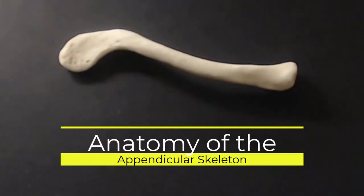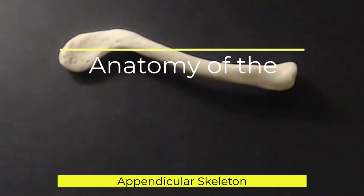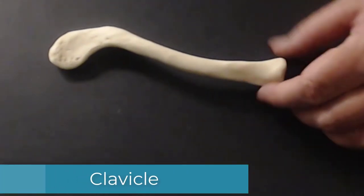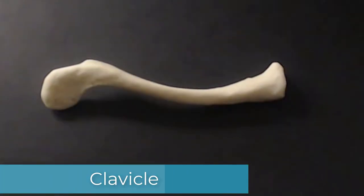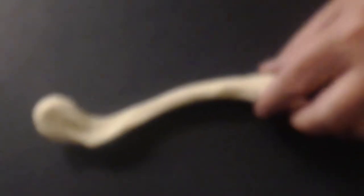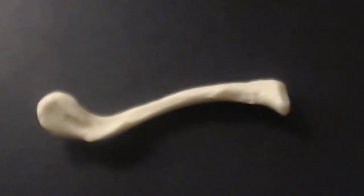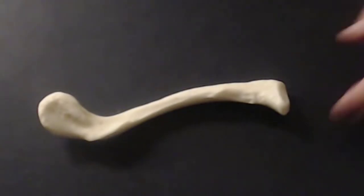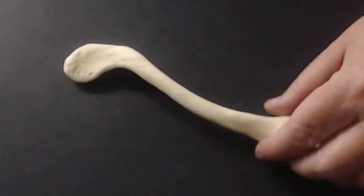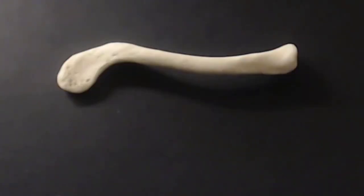This is the clavicle. There are no structures associated with this that you need to know, but on a practical exam you need to be able to identify this bone as the clavicle. The clavicles are the collarbones.